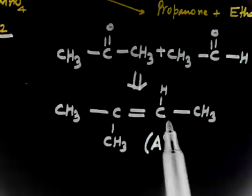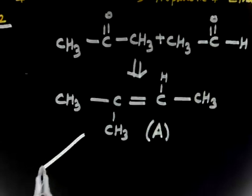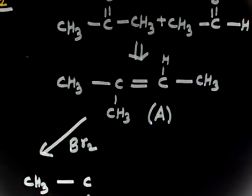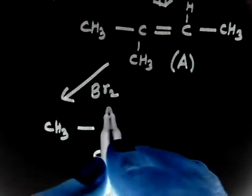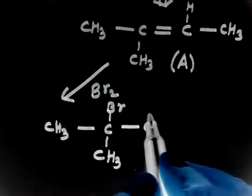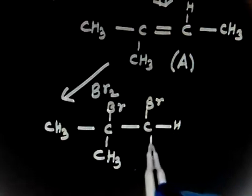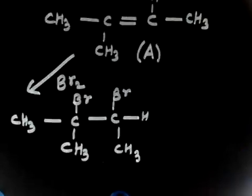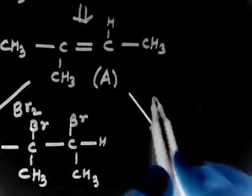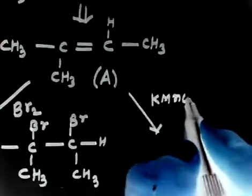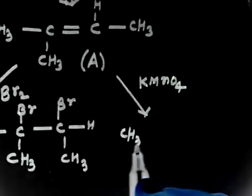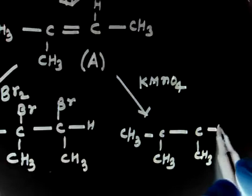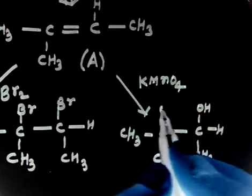Now, if you do bromination of A, 1 mole of bromine gets added: one bromine on this carbon and another bromine on the adjacent carbon, giving CH3-CBr(CH3)-CHBr-CH3. And if you do hydroxylation with cold dilute KMnO4, 2 OH groups get added on these two carbons, giving CH3-C(OH)(CH3)-CH(OH)-CH3.